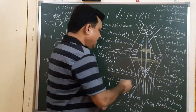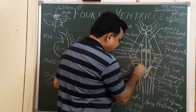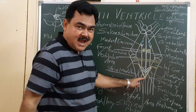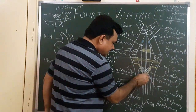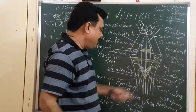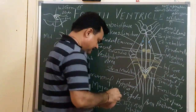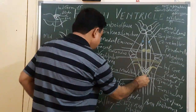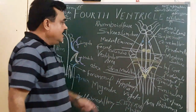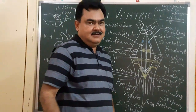Another important structure is the taenia, a white matter fold. At the inferior angle, the taenia forms a tent-like structure called the obex. So the taenia is formed by white matter and the obex is formed at the inferior angle. These structures form the floor of the fourth ventricle.